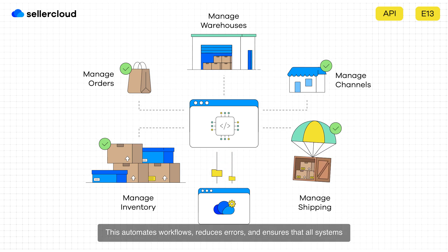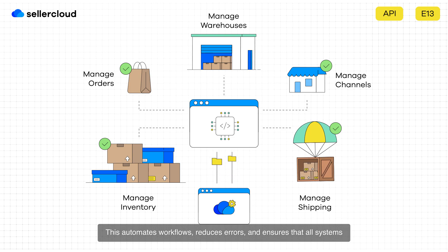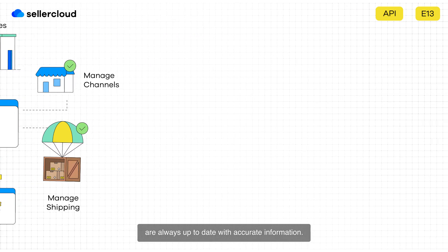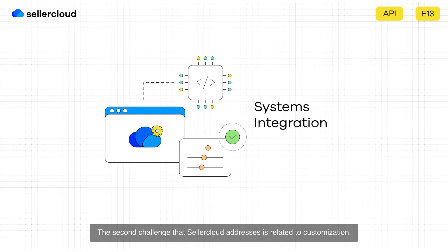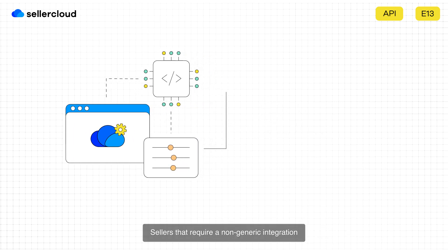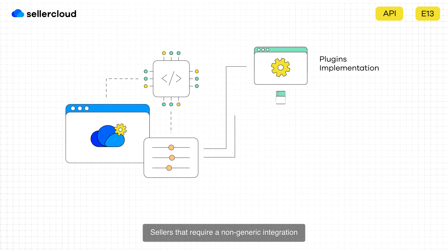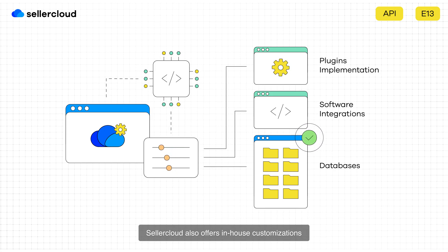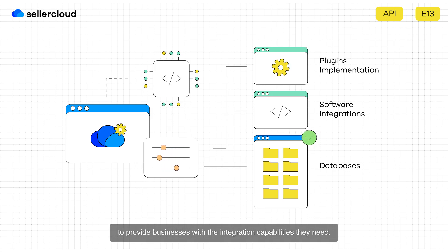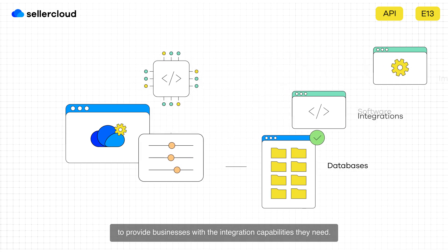This automates workflows, reduces errors, and ensures that all systems are always up to date with accurate information. The second challenge that SellerCloud addresses is related to customization. Sellers that require a non-generic integration can use the API to build their own integrations. SellerCloud also offers in-house customizations to provide businesses with the integration capabilities they need.